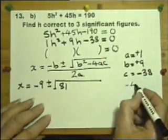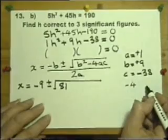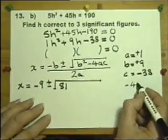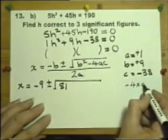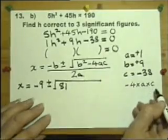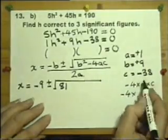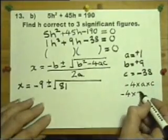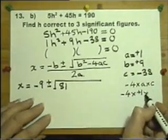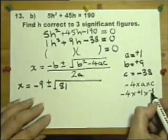This is where the most mistakes are made in this. When you come to look at the minus four A C. So let's just look at it over here for a minute. Minus four A C actually means minus four multiplied by A and multiplied by C.